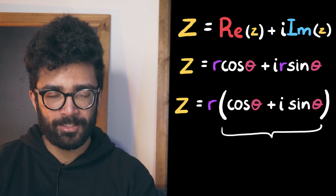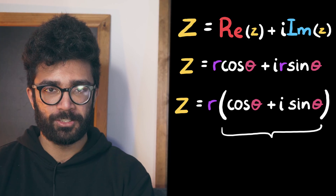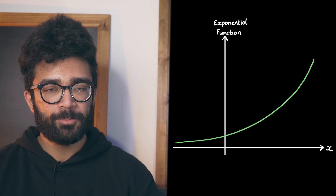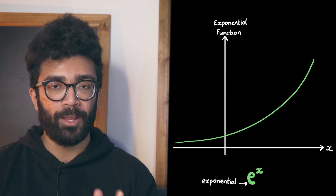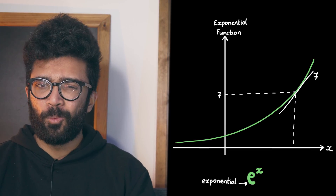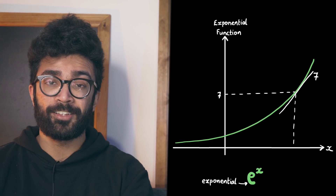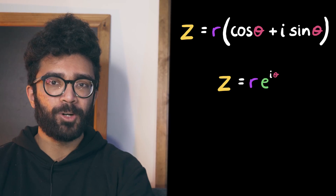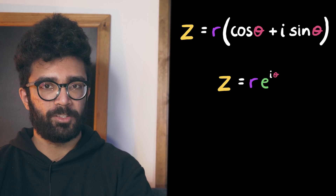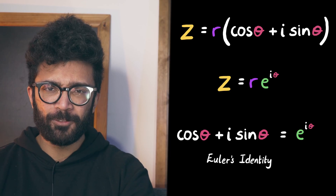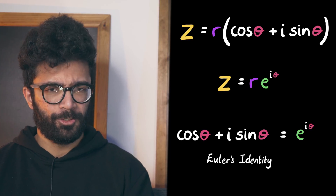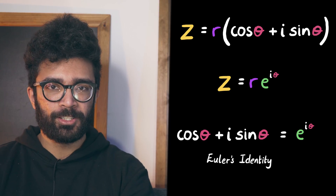Here's the thing: this whole expression inside the brackets can be written much more compactly using exponential functions. What we specifically call the exponential function is a very interesting one — its value at every point equals the gradient of the function at that same point. When combined with complex numbers, it can also concisely represent sine and cosine functions. More precisely, r times (cos theta + i sin theta) can be represented as r times e to the power of i times theta. This identity is known as Euler's identity, and it would take a whole video to discuss properly.